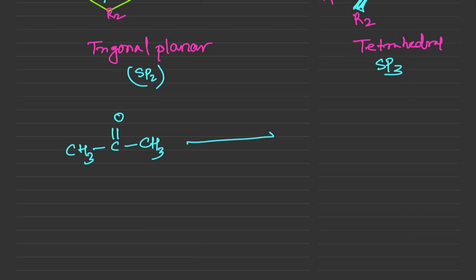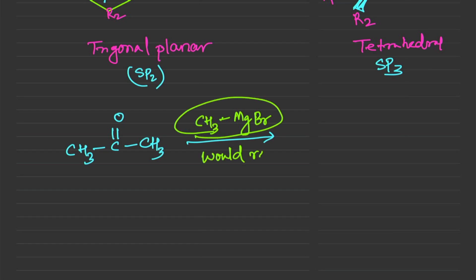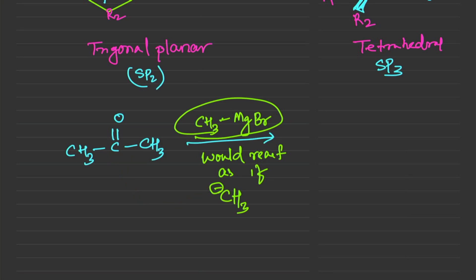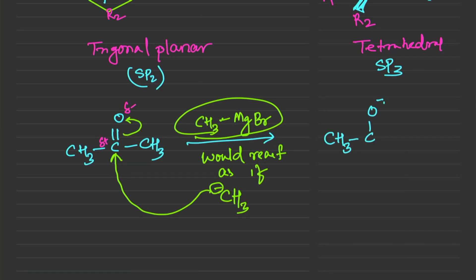Let's say we have CH3MgBr. We know this Grignard reagent reacts as if it were CH3⁻. The CH3⁻ will attack the carbonyl carbon, which is δ+ while oxygen is δ−. To maintain the octet, the pi electrons get pushed towards oxygen. The tetrahedral intermediate we form is CH3-C(O⁻)-CH3 with the new incoming CH3 group attached.